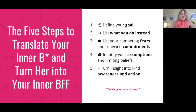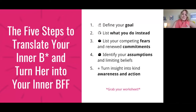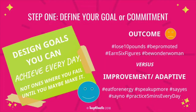So step one is about defining your goals or commitments. As super driven, amazing, awesome women and men, we all know goals — we're probably all setting goals from five years old. There are a couple of different ways to set those goals. We can set ourselves up for success or we can set ourselves up for failure. There are two kinds of goals: an outcome goal, or an improvement and adaptive goal.